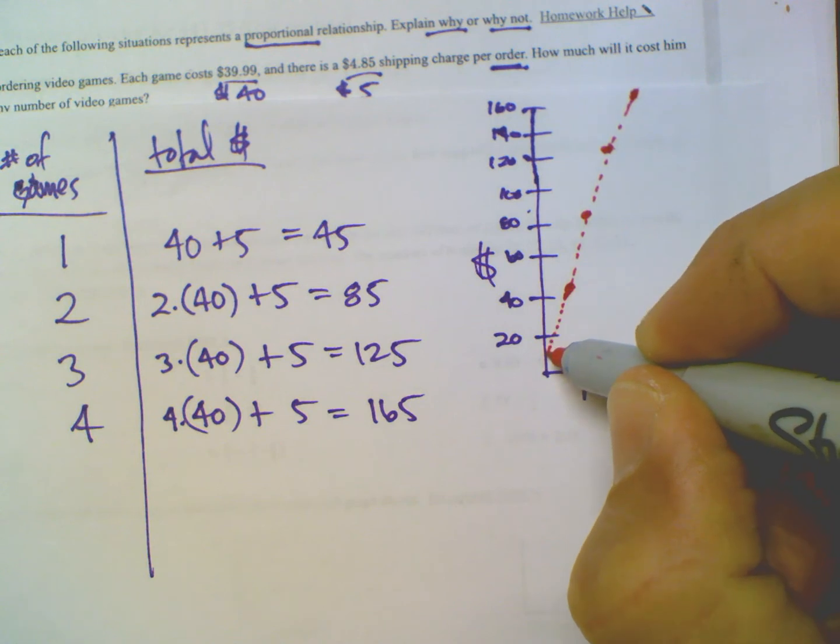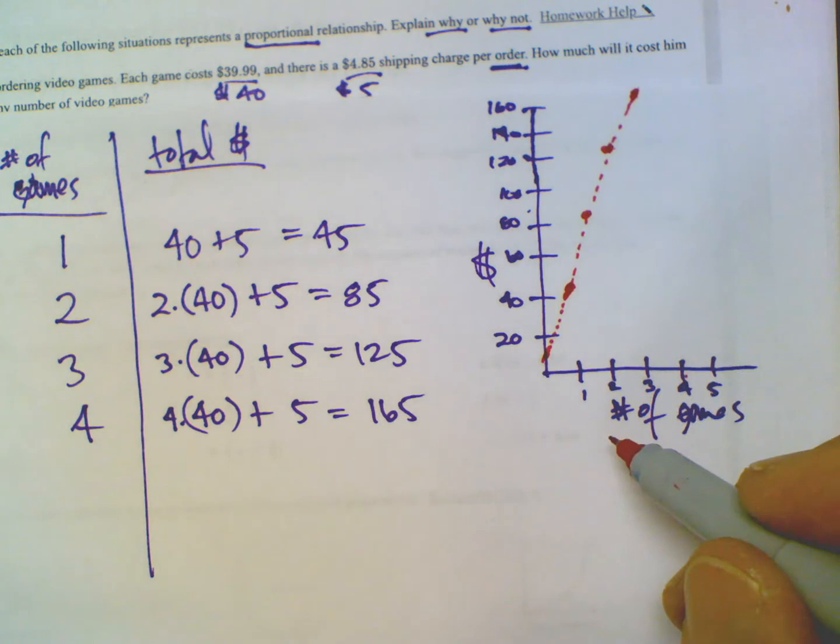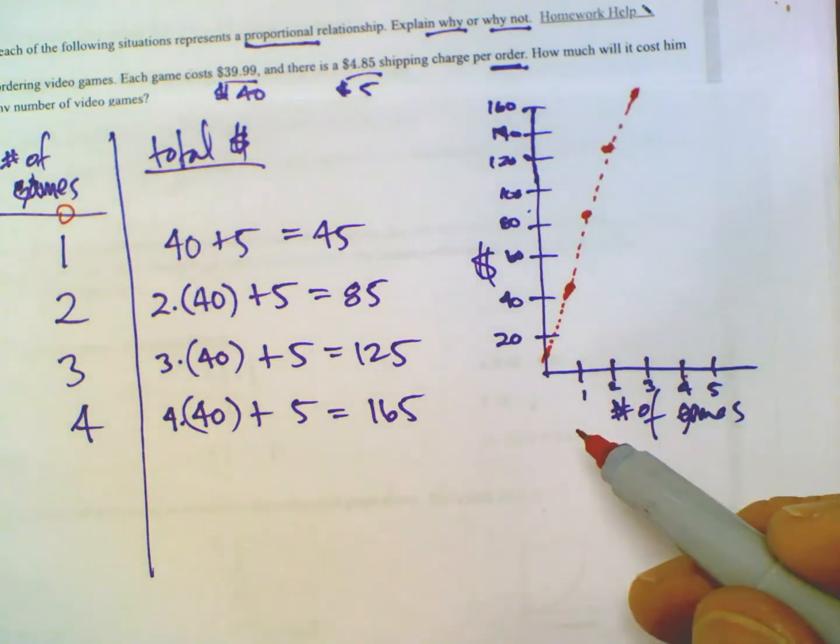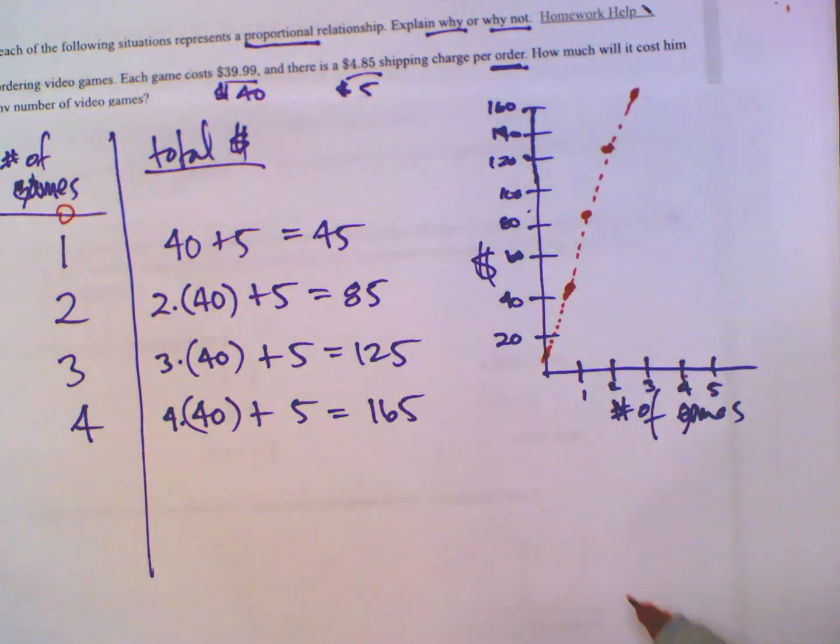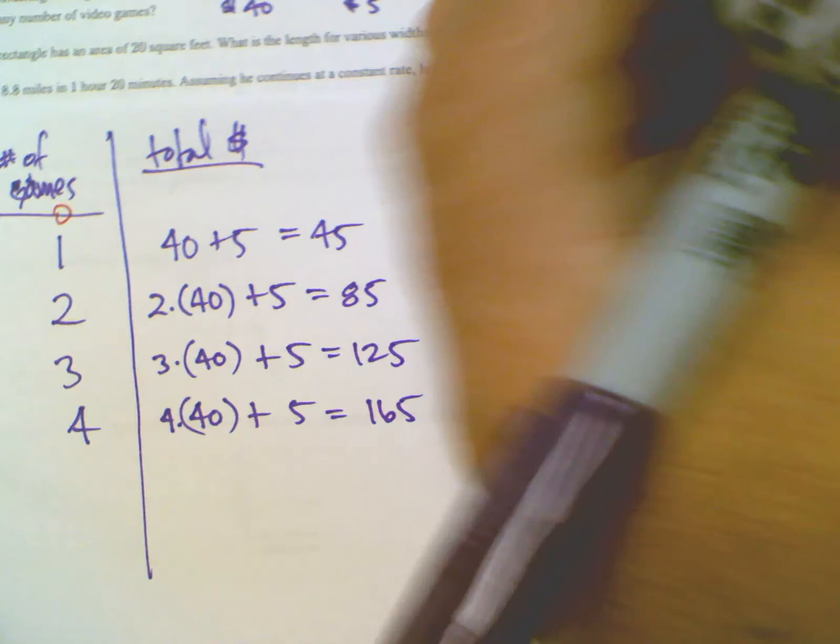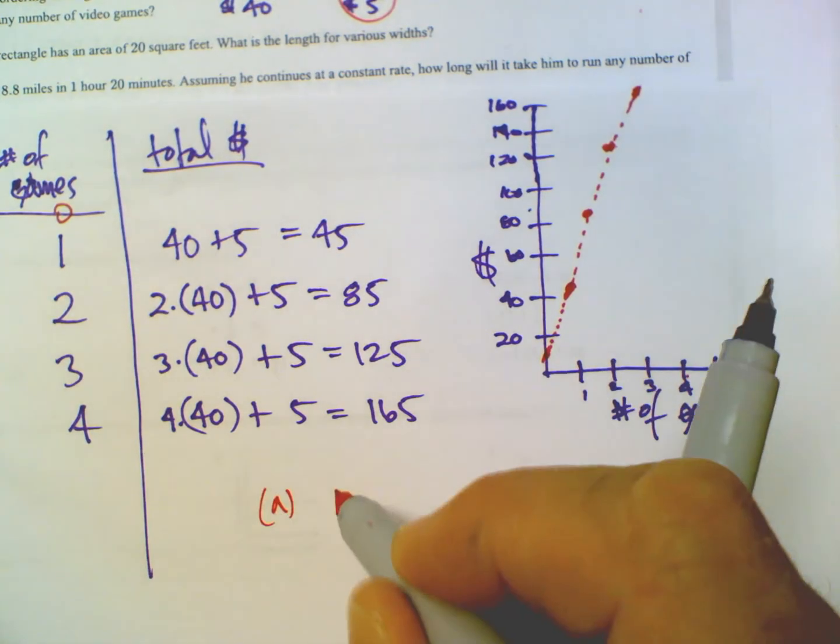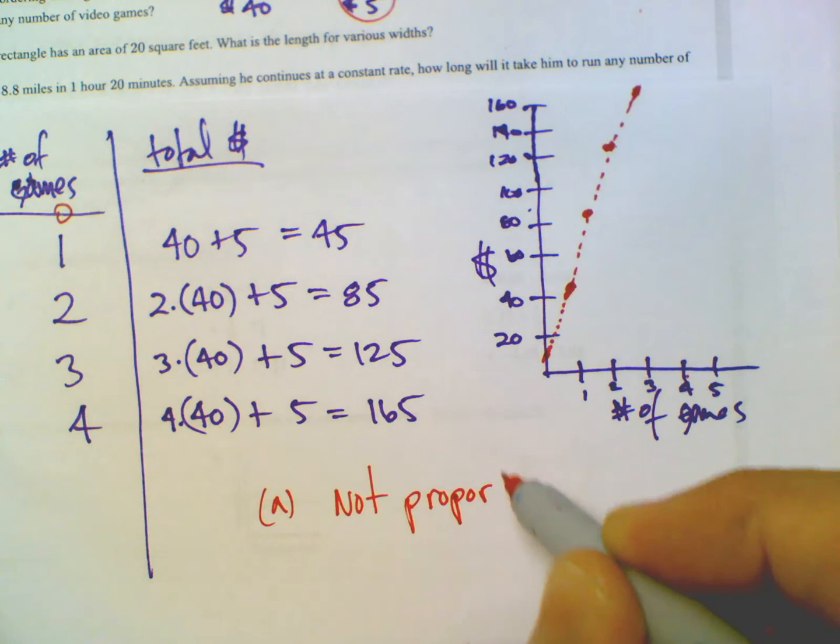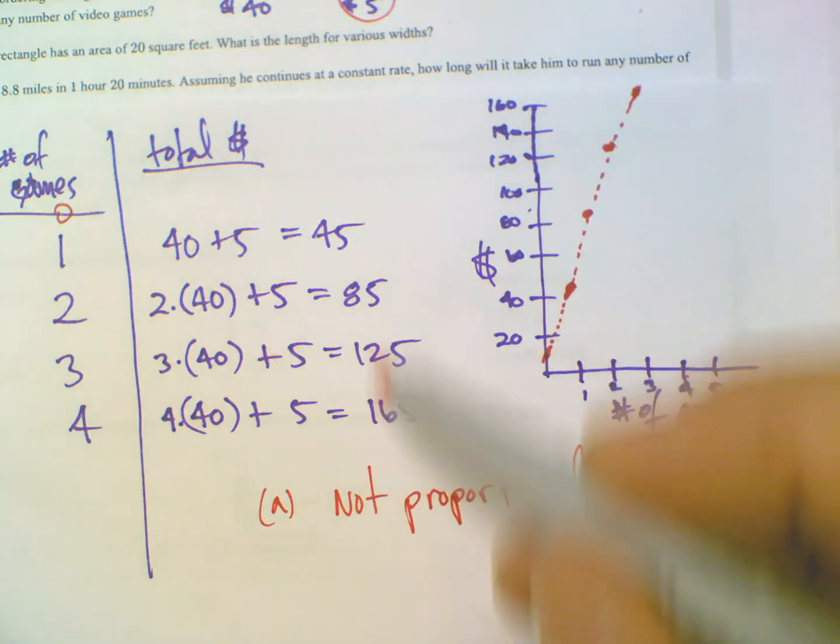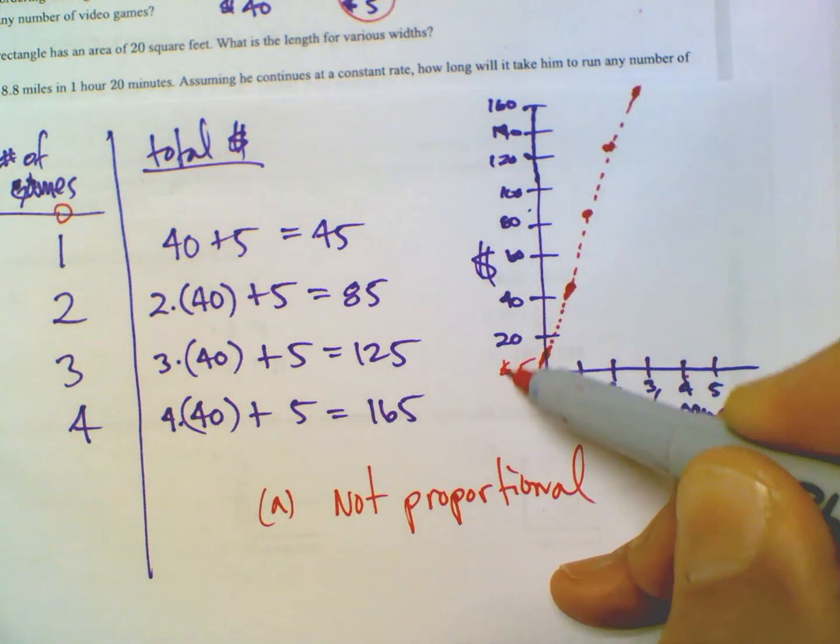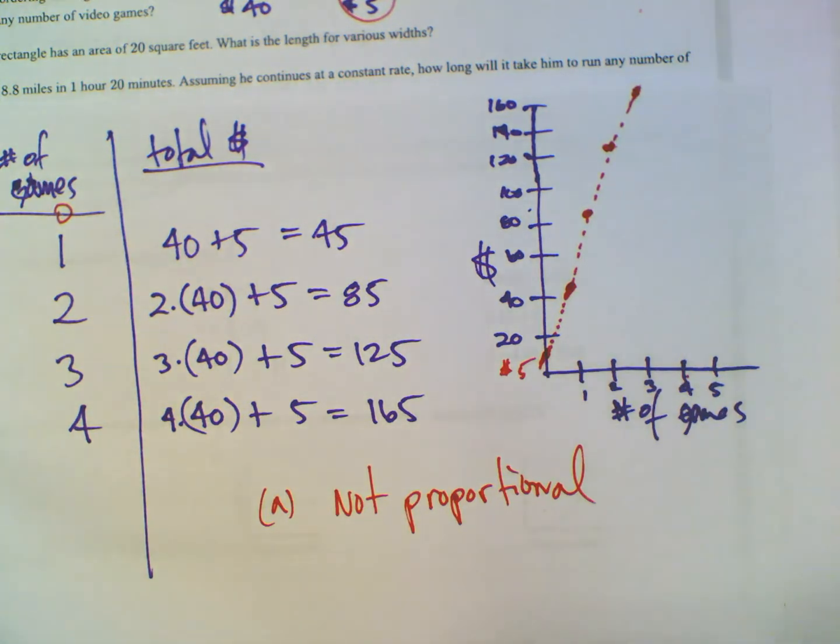But the question is, remember, it's got to be linear, so it's got to have a constant rate, but it also has to cross through zero, zero. And if I think about this and I continue my line, it's not going to cross through zero, zero because at zero games, you can't figure this out because there's really no such thing as ordering zero games. And when you look at my graph, it doesn't cross through zero, zero. So this one's a little tricky, but it's this $5 shipping that throws it off to be not proportional. So for part A, it is not proportional. It's not a proportional relationship because of that $5 shipping fee. If that $5 shipping fee did not exist, it would be proportional, but it's that $5. If that line, you can see that line actually goes through about $5 is where it goes through when it hits the y-axis.